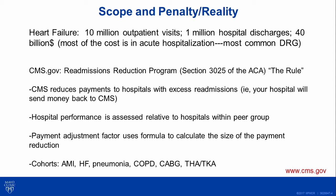CMS has passed a readmissions reduction program, affectionately known as the rule. In this process, your hospital actually has to send a check back if readmissions exceed a certain rate — which is why you hear this so much from hospital administrators. Your performance is judged relative to hospitals in your peer group — basically hospitals that care for the same proportion of Medicare patients. CMS uses some sort of adjustment factor to calculate the size of this payment back to them.